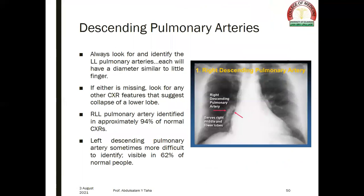The descending pulmonary arteries or lower lobe pulmonary arteries: always look for and identify the lower lobe pulmonary arteries — each will have a diameter similar to a little finger. If either is missing, look for other chest x-ray features suggesting collapse of the lower lobe. The right lower lobe pulmonary artery is identified in approximately 94% of normal chest x-rays, while the left descending pulmonary artery is visible in only 62% of normal people. On this chest x-ray we can see the right descending pulmonary artery, which is a normal finding.